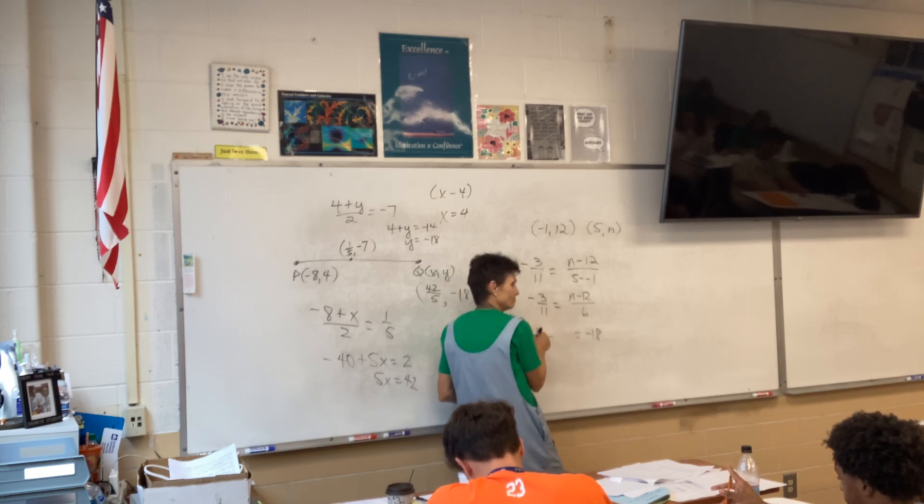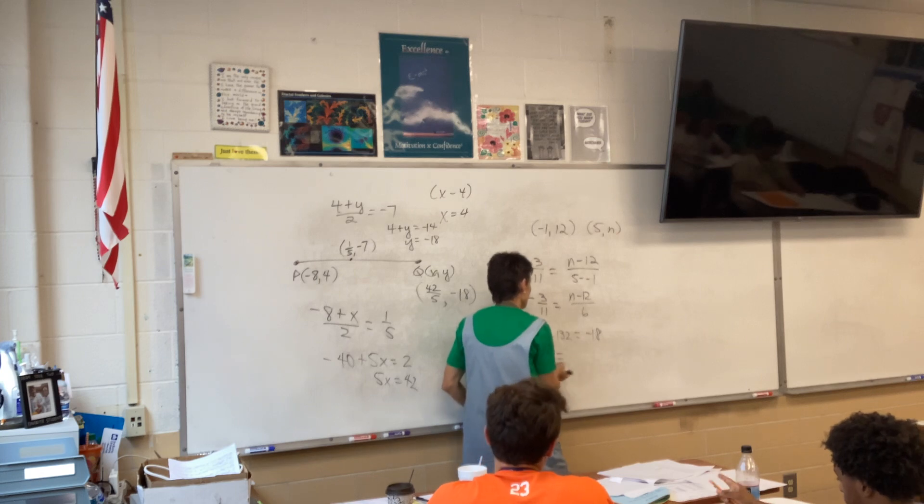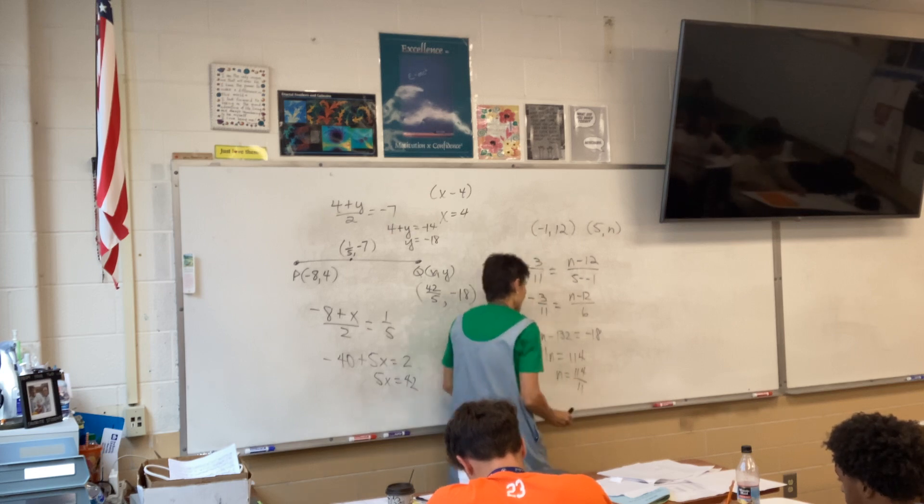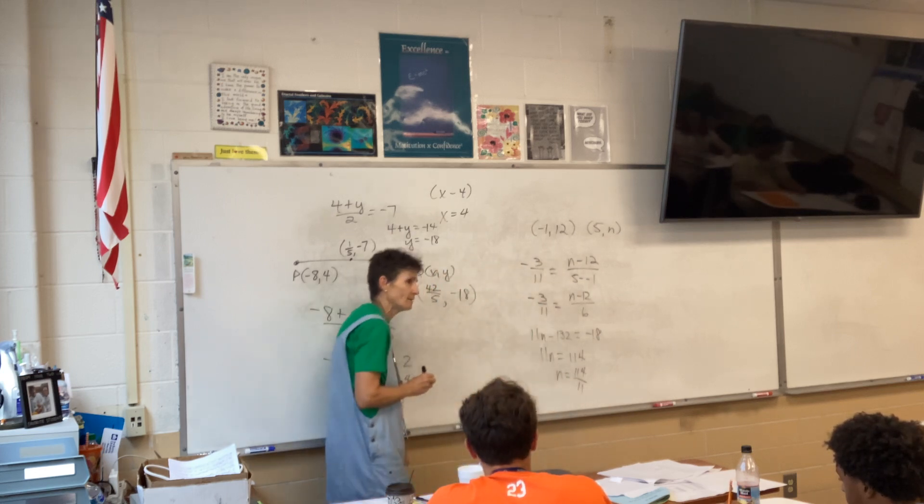11 and, what is that, 132? 132. Yeah, gotta be careful. I gotta be careful. And then that's 114. So, how about that answer? 114 over 11? That's what I got. Now we got. Okay, thank you.